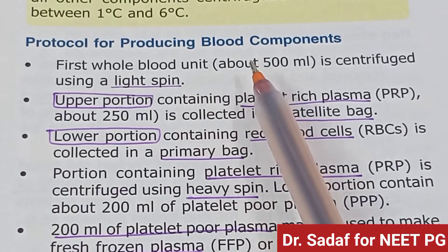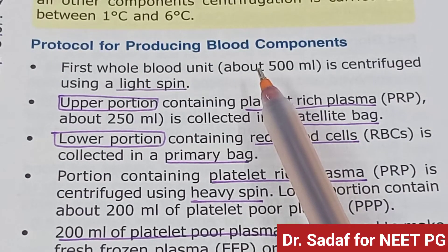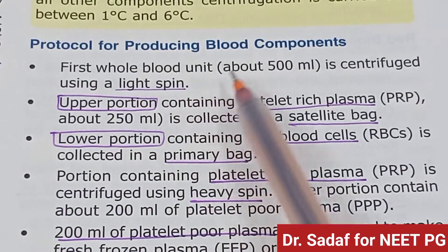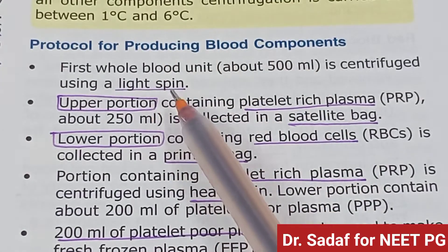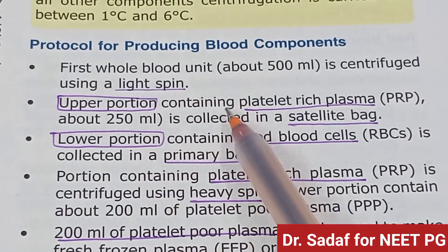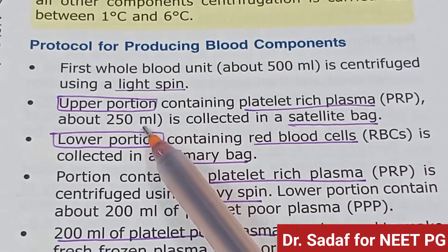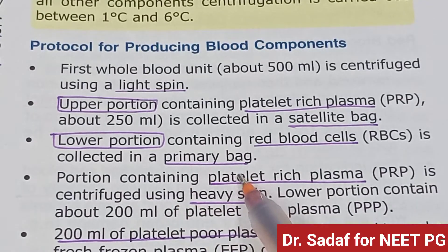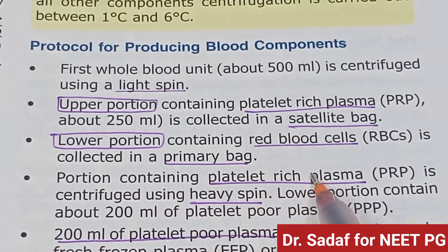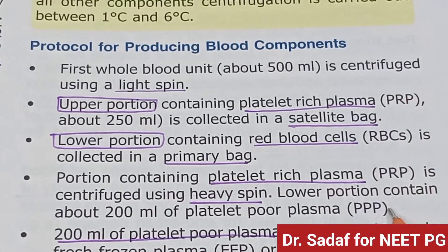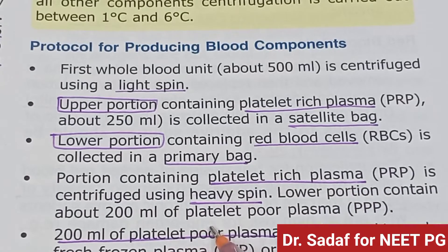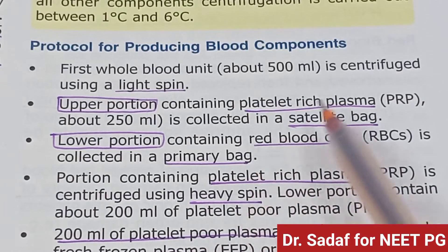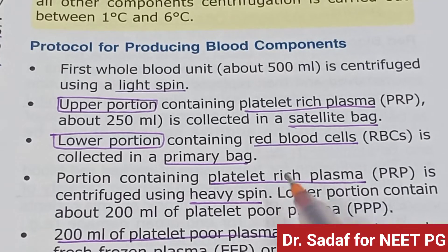Protocol for producing blood components: a 500 ml whole blood unit is given a light spin. The upper portion contains platelet-rich plasma (approximately 200 ml), which is collected in a sterile bag. The lower portion contains red blood cells, collected in a primary bag. The platelet-rich plasma portion is then centrifuged with a heavy spin, yielding approximately 200 ml platelet-poor plasma in the lower portion.